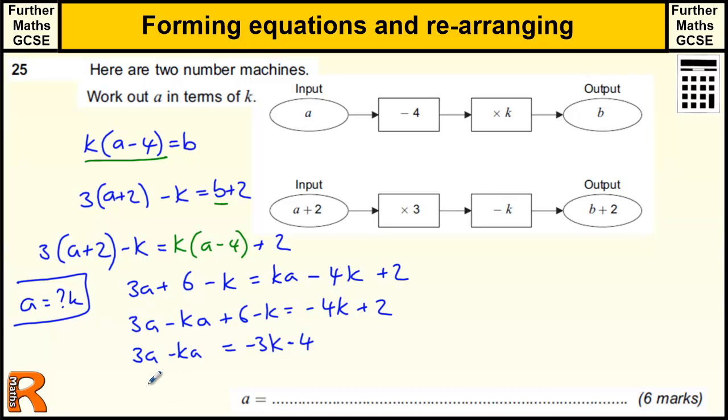So we want a on its own, so we need to factorize out the a out of a bracket. Because we've got 3 times a and minus k times a, if we take the a out we've got 3 minus k times a, and that's equal to minus 3k minus 4.